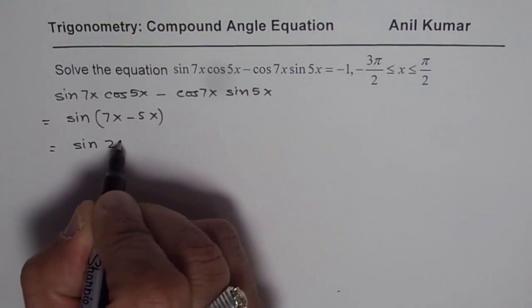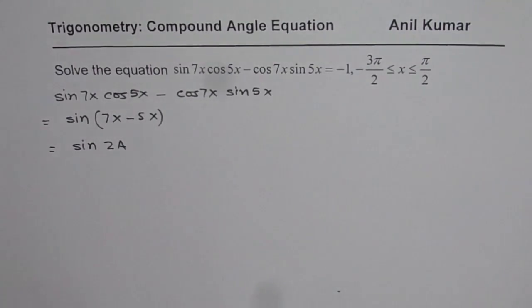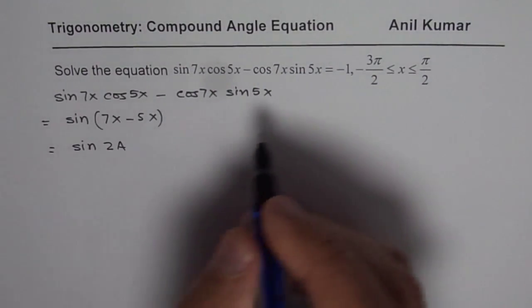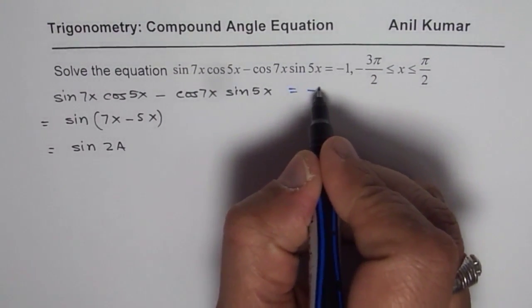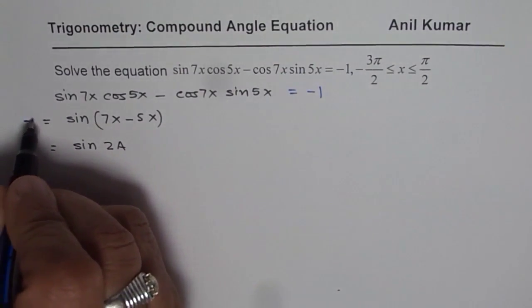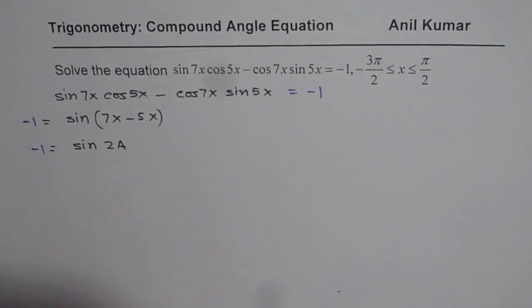We have sin 2x as the left side of this equation. In a way, what we are given here is all this is equal to minus 1. So, we have minus 1 is equals to sin of 2x.